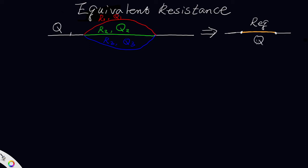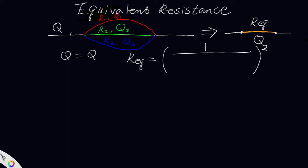In this scenario, the total airflow going to the three airways in parallel is the same as the total airflow going into the equivalent airway, so Q remains unchanged. To calculate the equivalent resistance, we have this equation: R-equivalent equals the square of 1 divided by the sum of (1 divided by square root of R1) plus (1 divided by square root of R2) plus (1 divided by square root of R3).